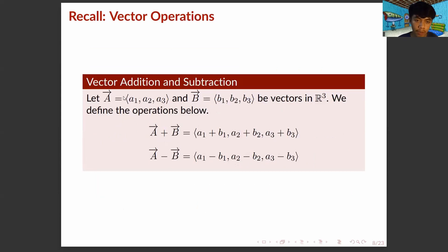Here we have vector operations — vector addition and subtraction. Let vector A equal (A₁, A₂, A₃) and vector B equal (B₁, B₂, B₃) be vectors in R3. The sum and difference of two vectors is equal to the sum and difference of their corresponding components.